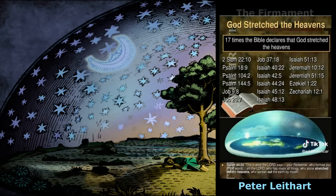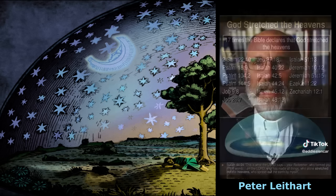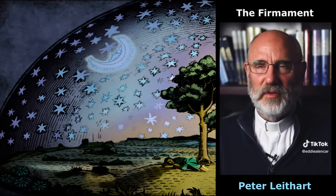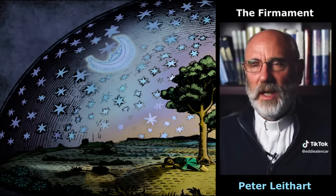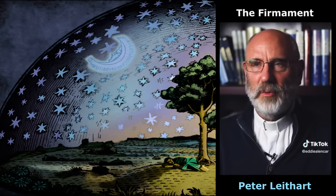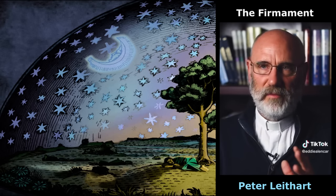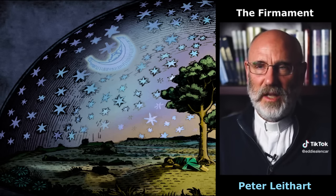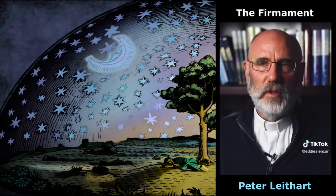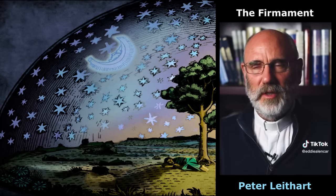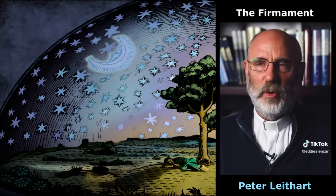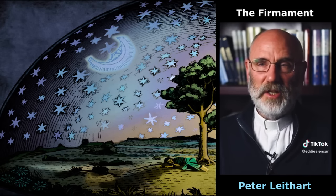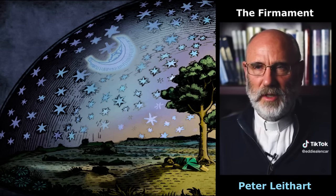The creation account is, among other things, a temple-building account — God is building his cosmic temple. We can find analogies between the construction of the tabernacle by Moses, the construction of the temple by Solomon, and the creation week. In both cases, one of the things happening is the formation of boundaries: God creates boundaries between the waters above and waters below, and between the land and the sea on day three. That's what Moses and Solomon do as well — they form a world, bounding off holy places from profane places, with different degrees of holiness.